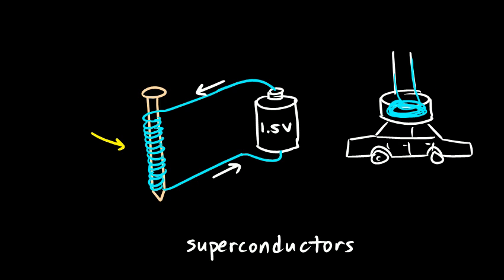If you really turn up the voltage it's going to get hot and melt. But a superconductor is a material that has no electrical resistance, and that allows you to turn up the voltage really high without it getting hot. There are still some saturation limits to how much current you can put through a superconductor, but it's not limited by the heat from the thing physically melting.